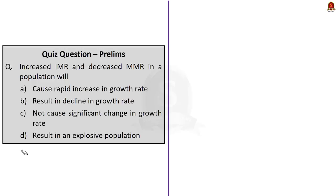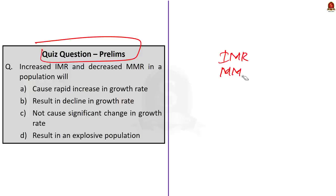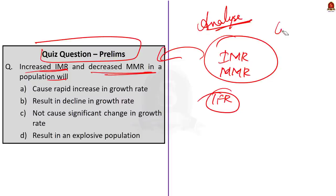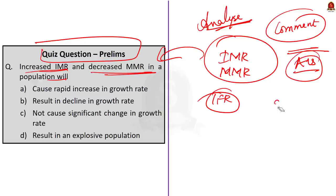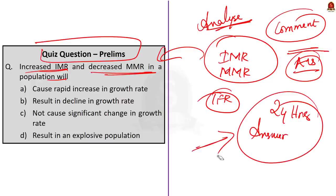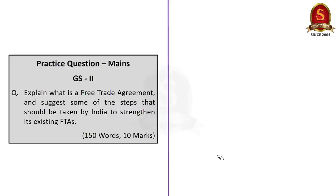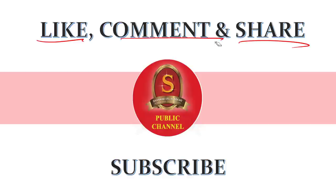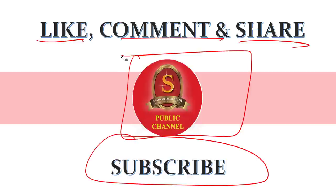Now look at this quiz question. We discussed the infant mortality rate, maternal mortality rate, and total fertility rate. Based on these topics, this question is framed — read it carefully and answer based on the definitions I gave you. I gave this as a question so you can analyze how questions will be asked based on concepts. The answer will be put up within 24 hours. Also displayed is a mains question — go through it, write your answers and post in the comment section. If you like this video, do like, share, and comment, and don't forget to subscribe to the Shankar IAS Academy's YouTube channel. Thank you for listening.